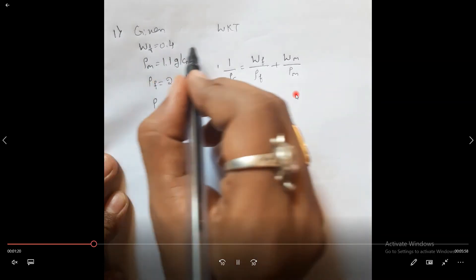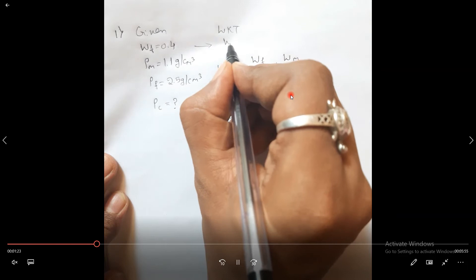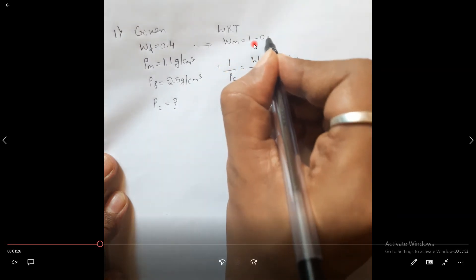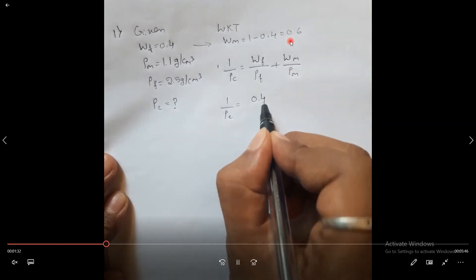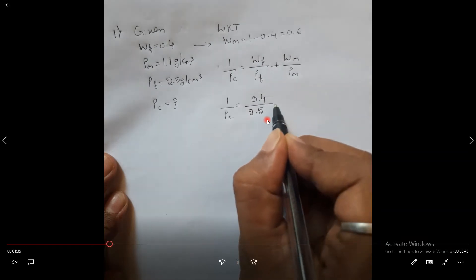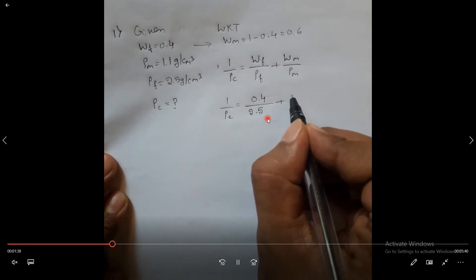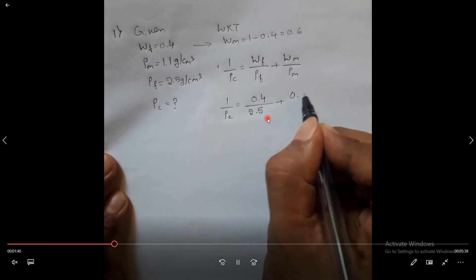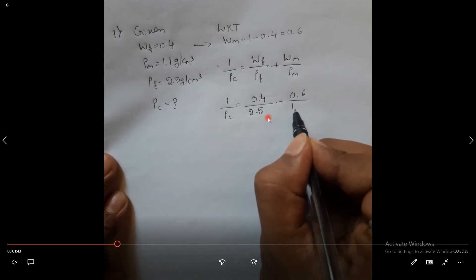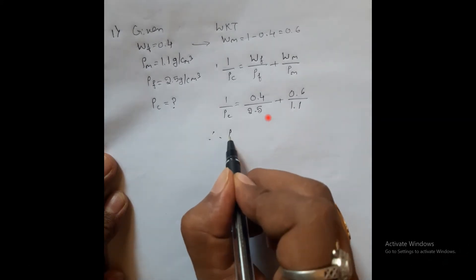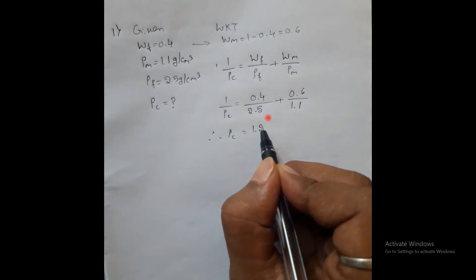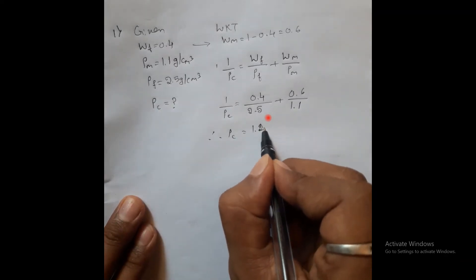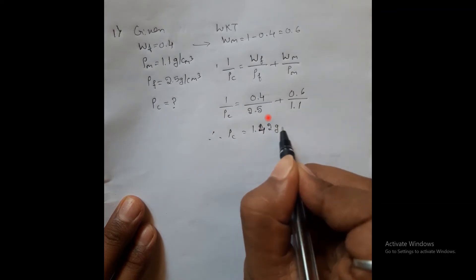So 1 by Rho_C is equal to — Wf is given. We can calculate Wm, that is 1 minus 0.4, which leads to 0.6. And if I substitute that, it becomes 0.4 divided by 2.5, plus 0.6 divided by 1.1. Therefore, density of the composite is equal to 1.42 gram per centimeter cube.